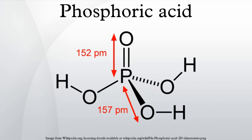Associated with these three dissociation constants are corresponding pKa1 = 2.12, pKa2 = 7.21, and pKa3 = 12.67 values at 25°C. Even though all three hydrogen atoms are equivalent on an orthophosphoric acid molecule, the successive Ka values differ since it is energetically less favorable to lose another H⁺ if one has already been lost and the molecular ion is more negatively charged.